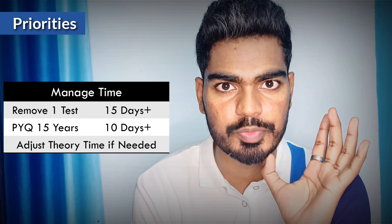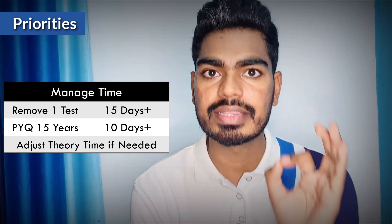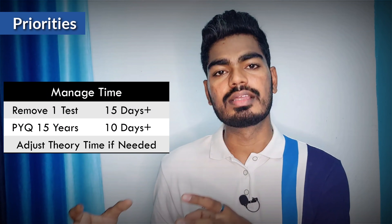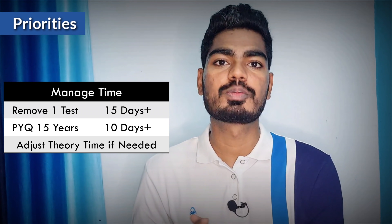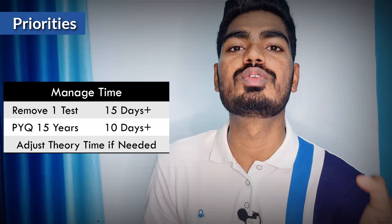So that is the basic timetable you can make. As mentioned, this timetable may not be possible for everyone to follow. The first thing you can remove to increase time for theory is the second test series — that should be your least priority. You will automatically get 15 extra days to cover the theory. Even then, if you need more time, the second least priority is 15 years of previous questions. Instead of 30 years, focus only on 15 years and you gain 10 more days for theory.